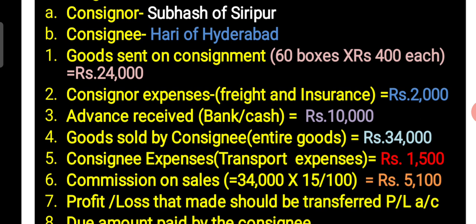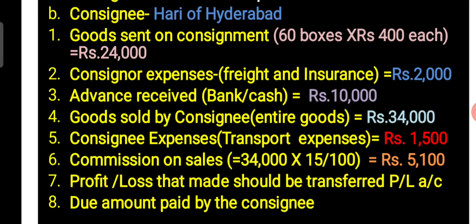Consignee expenses in this problem: Rs. 1,500 for transport expenses. Commission on Sales: at the rate of 15%, we calculate on total sales of Rs. 34,000 made by the Consignee, giving Rs. 5,100 as commission. The profit or loss made should be transferred to Profit and Loss Account. After preparation of the Consignment Account, we will know how much profit was made. The due amount paid by the Consignee — after preparing the Consignee Account, we come to know the due amount for settlement of the Consignment Account.